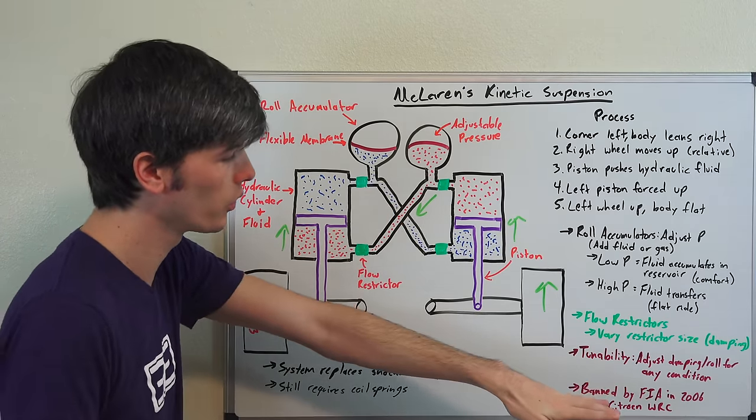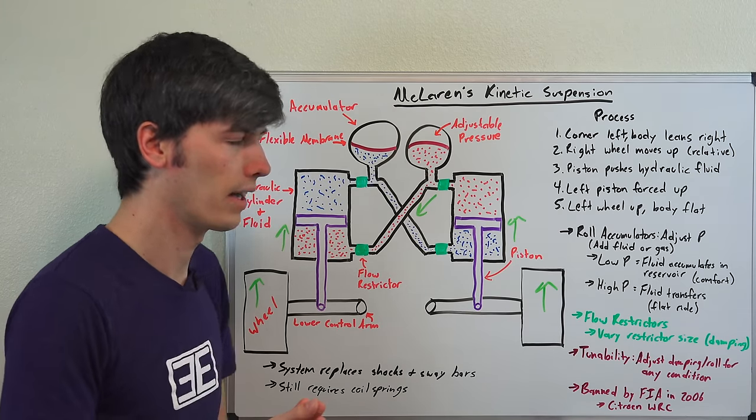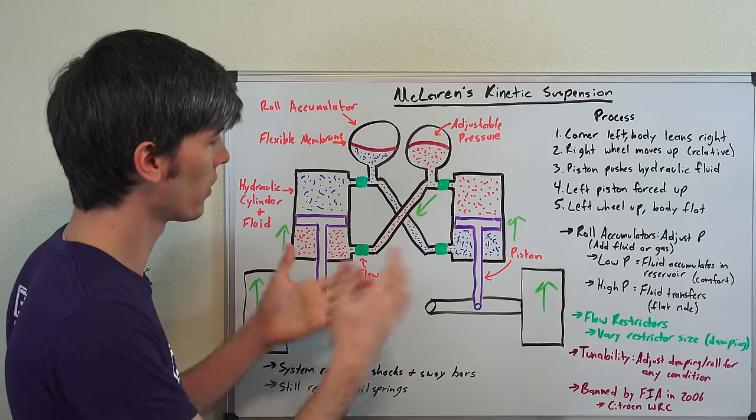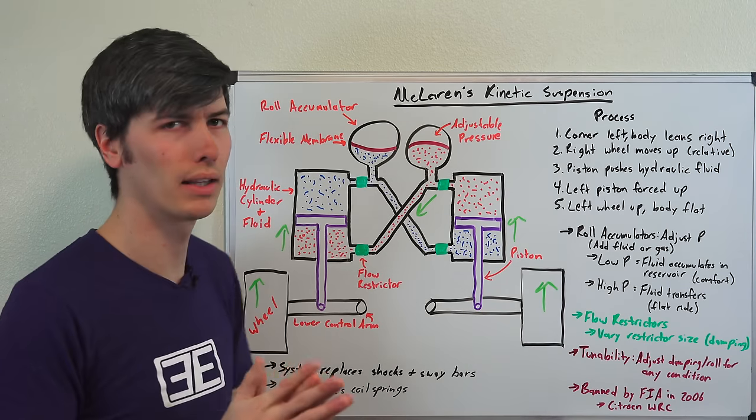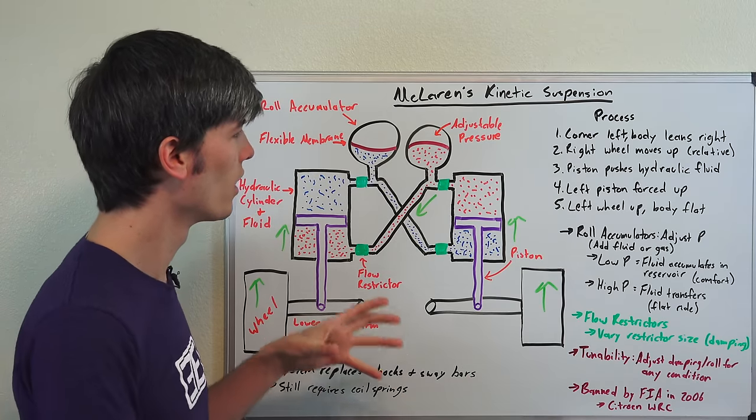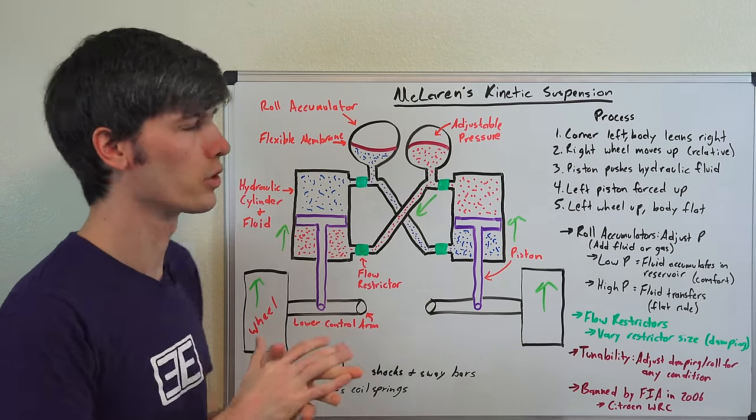This was also used by Citroen in the World Rally Championship and their vehicle. The FIA considered it too big of an advantage so they banned it in 2006, but it is a very cool system. It's also been used by Lexus on a production vehicle. Pretty cool system, pretty cool suspension design here which kind of eliminates an anti-roll bar and gives you a lot more control than you would have with just a static anti-roll bar.